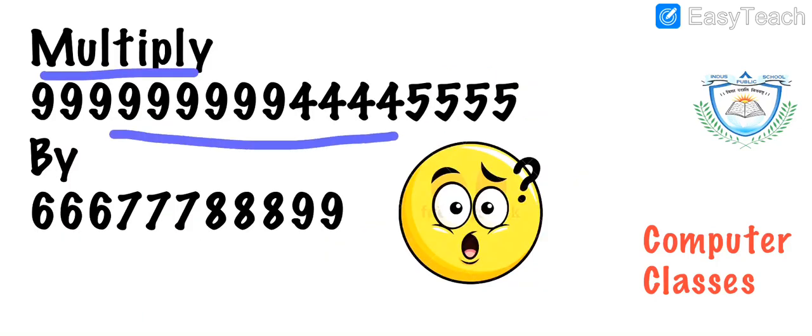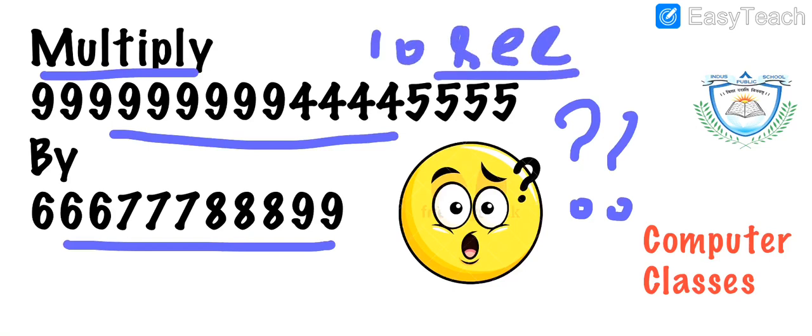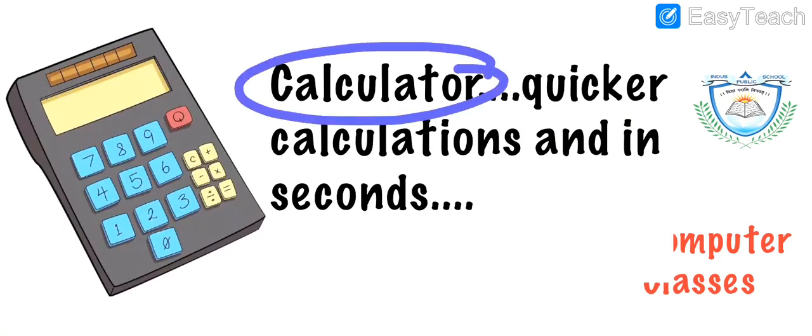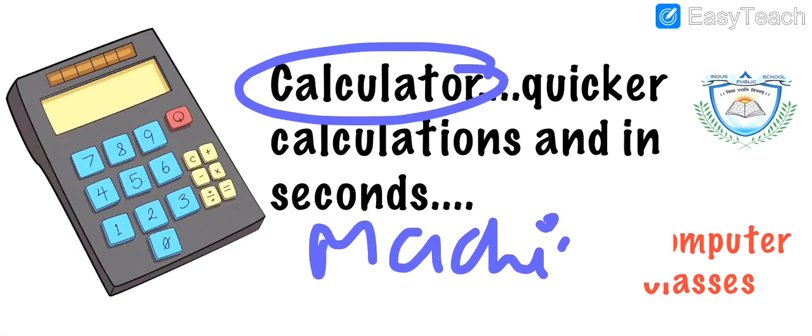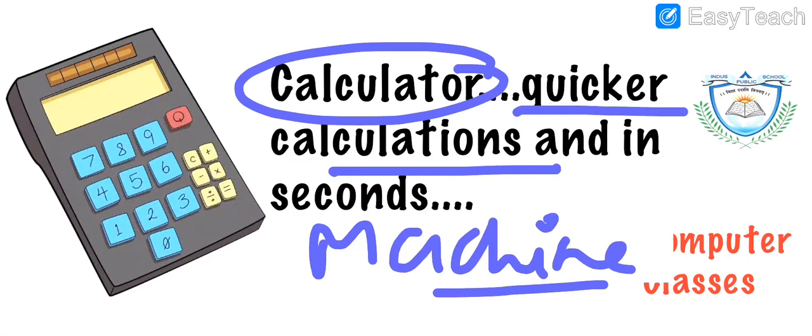Can you multiply this number by this number? Think and tell me the answers. I will give you only 10 seconds. Quickly, hurry up. I would say that this calculation, I'm very sure you can do this calculation, but it will require time. But if we have a calculator, that is again a machine. It quickly calculates all the calculations within seconds. Whenever we have such big numbers, we have a machine which is known as calculator.